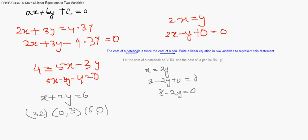Another solution: if x equals minus 2 and y equals 4, that gives minus 2 plus 8 equals 6. So we can find many such pairs, meaning this equation has infinitely many solutions.